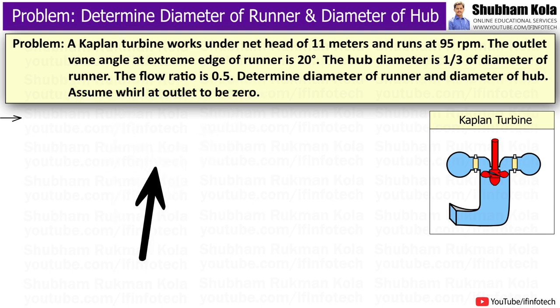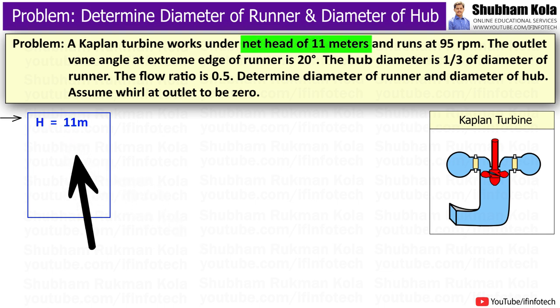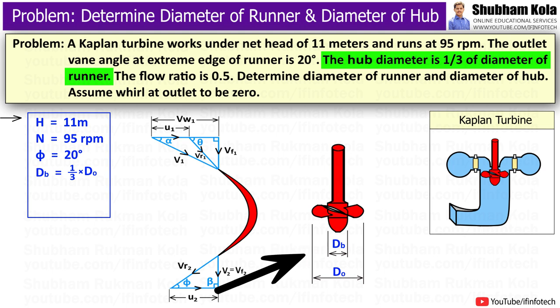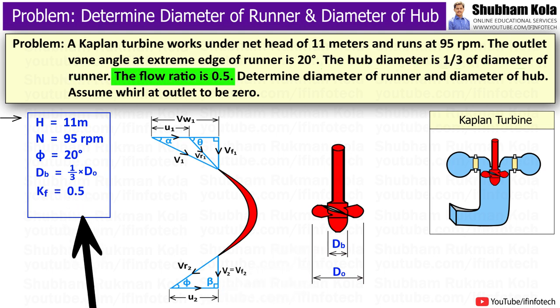Now to solve this problem, let's write down the given data provided, where net head is given as 11 meters and rotational speed N is given as 95 rpm. Outlet vane angle or blade angle at exit is given as 20 degrees. Here, diameter of hub is 1/3 of diameter of runner and flow ratio is given as 0.5. Velocity of whirl at outlet is 0.